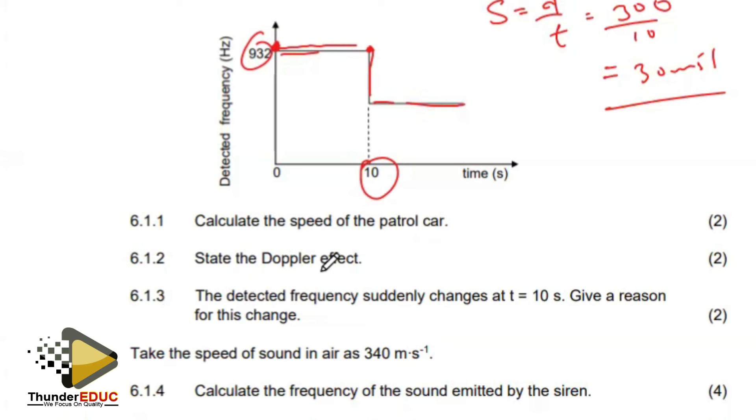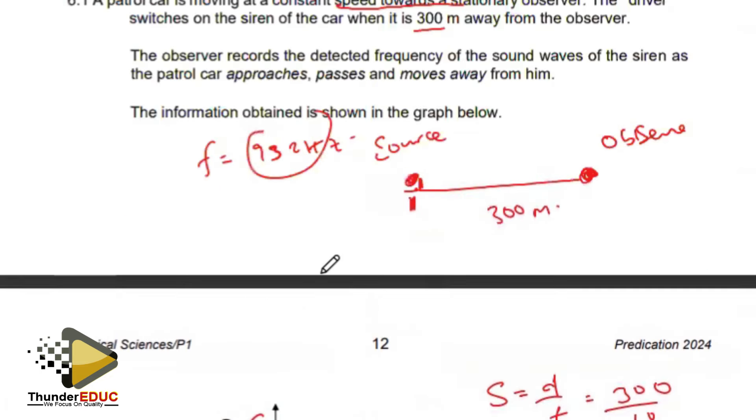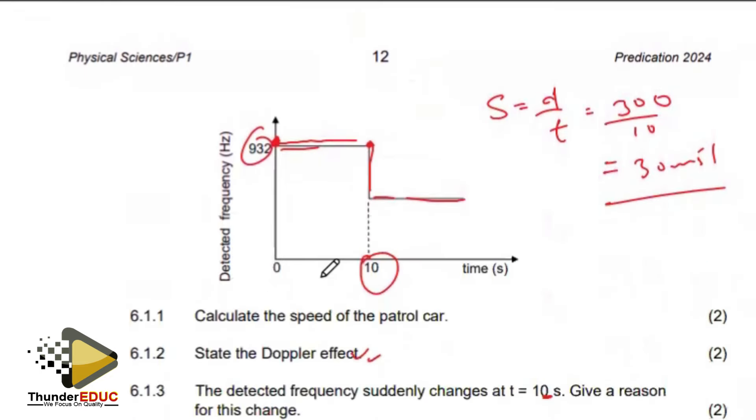Then 6.1.3, I'm telling you the detected frequency at this point. What is the question? The detected frequency suddenly changes at this point, and what is the reason for that?